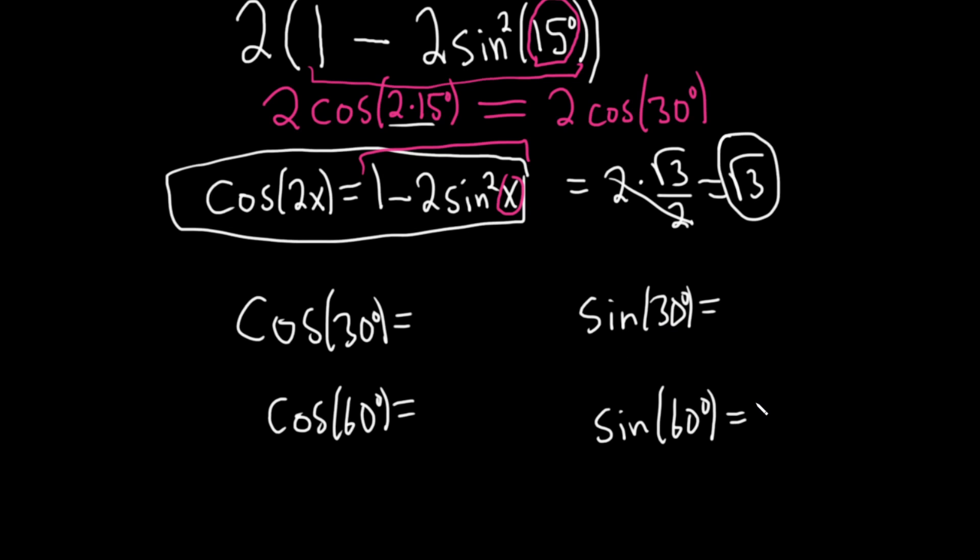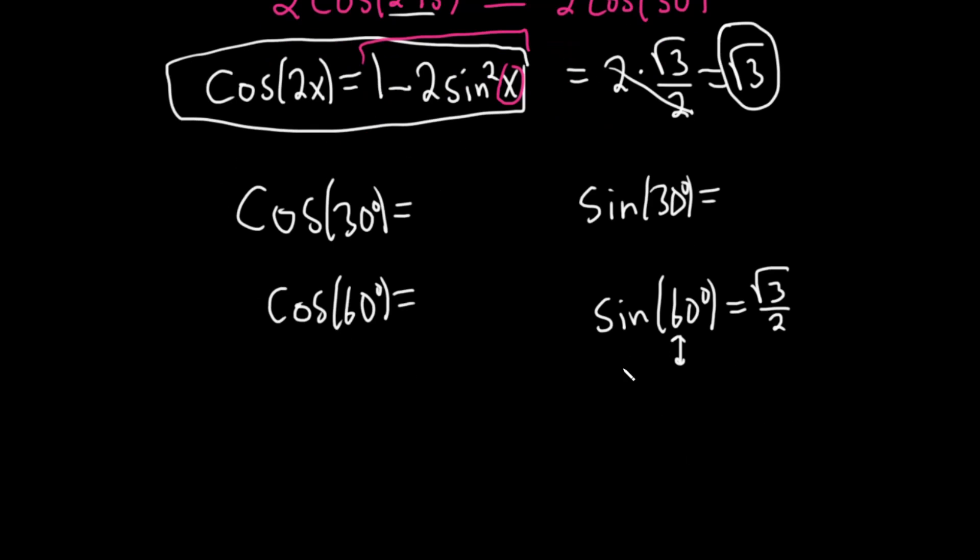The sine of 60 degrees is the square root of 3 over 2. 60 degrees in radians is pi over 3. 30 degrees in radians is pi over 6, and the sine of 30 is 1 half.